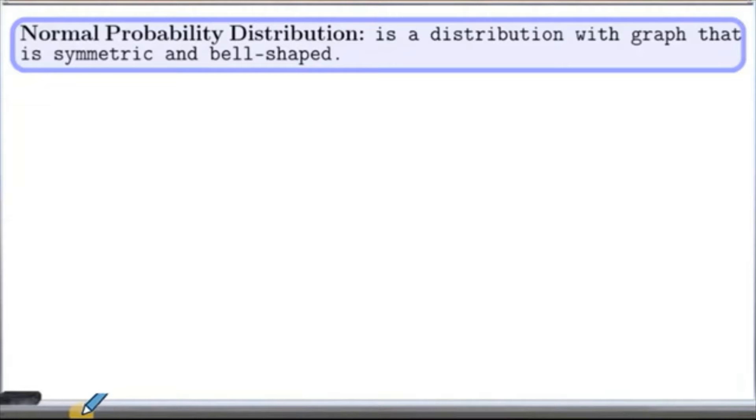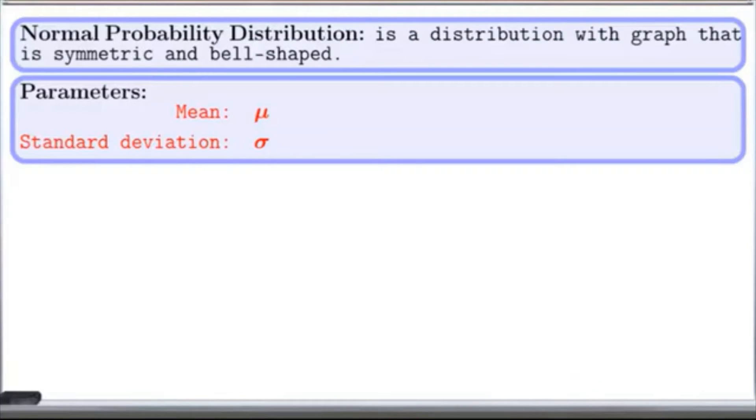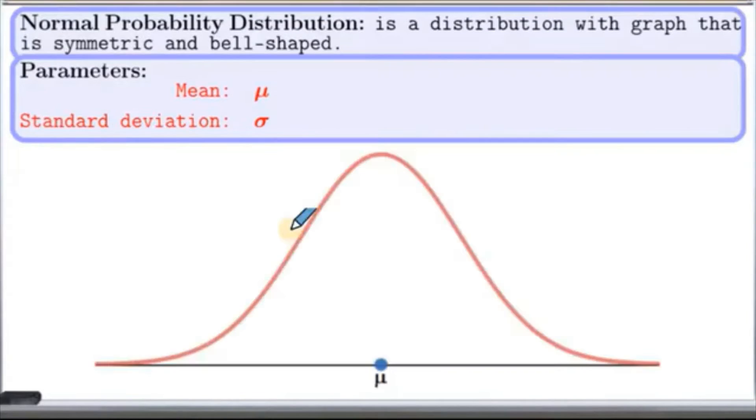Normal probability distribution is a distribution with graph that is symmetric and bell-shaped. It is determined by mean and standard deviation. Graph looks like this one for this distribution where mean is in middle and half of the data is on each side.